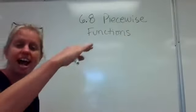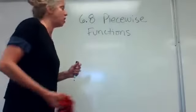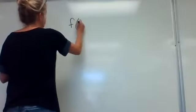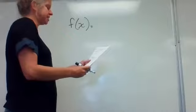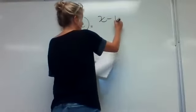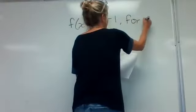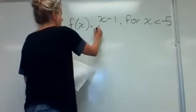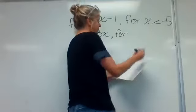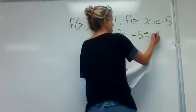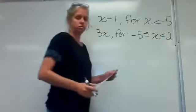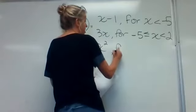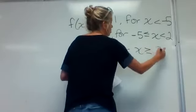It's going to give you a function that has three different pieces. The function is f of x equals: x minus one for when x is less than negative five; 3x for when negative five is less than or equal to x which is less than two; and x squared for when x is greater than or equal to two.